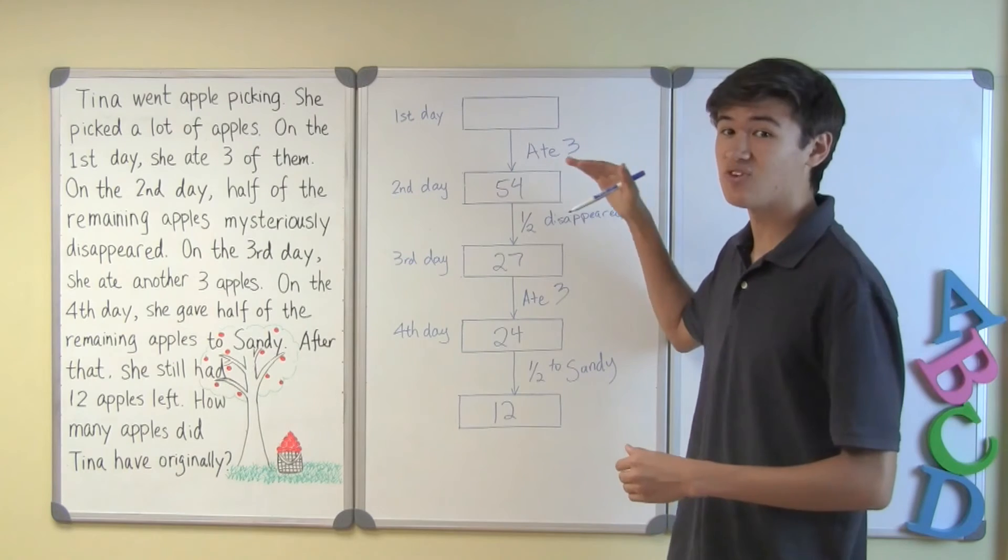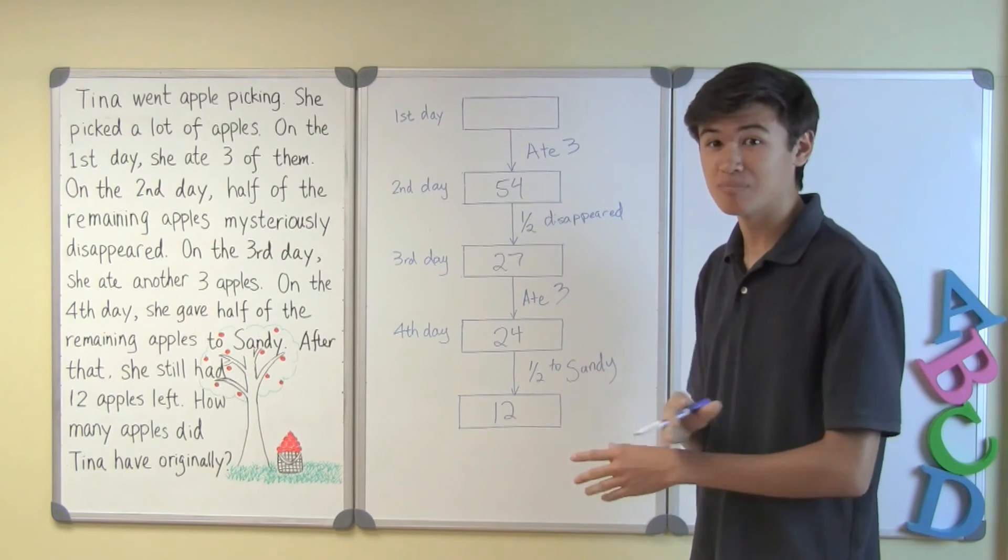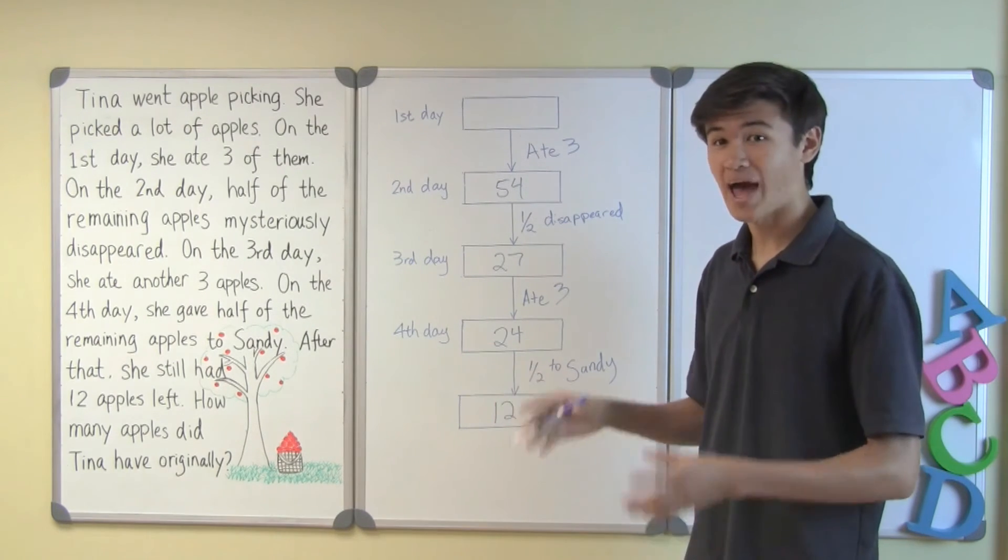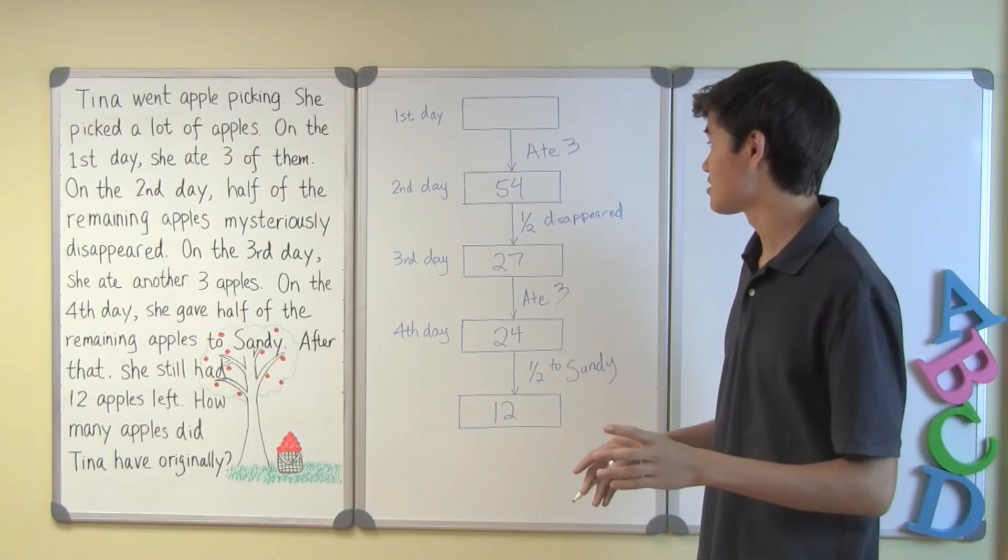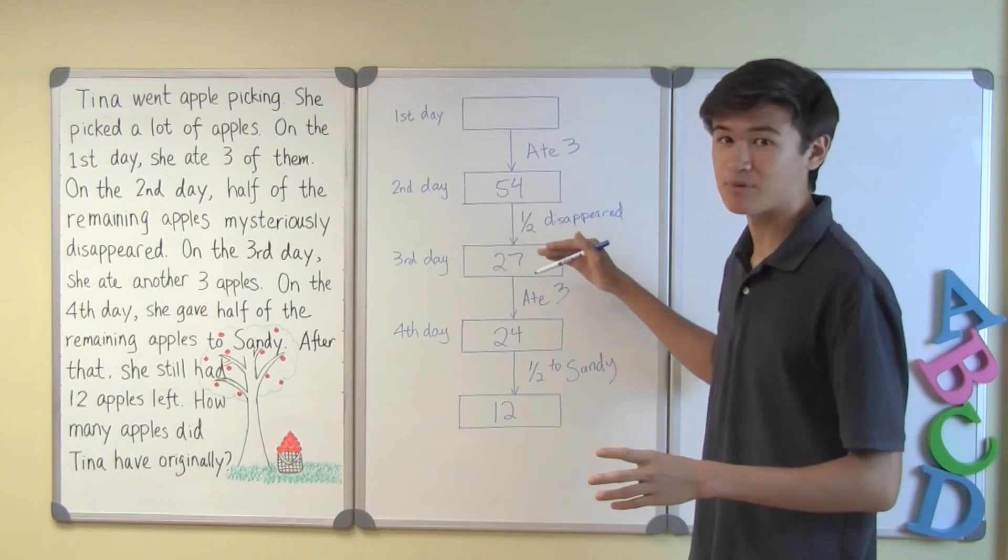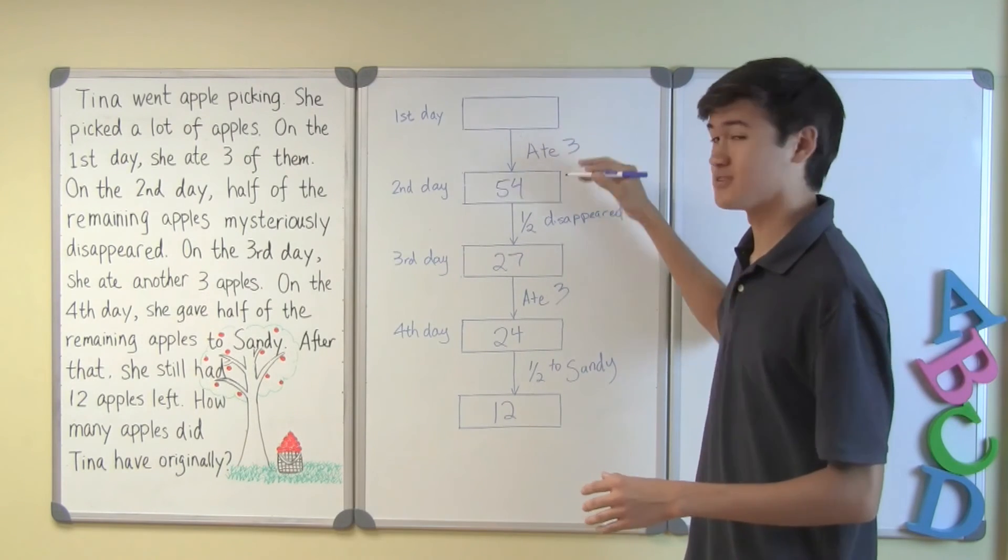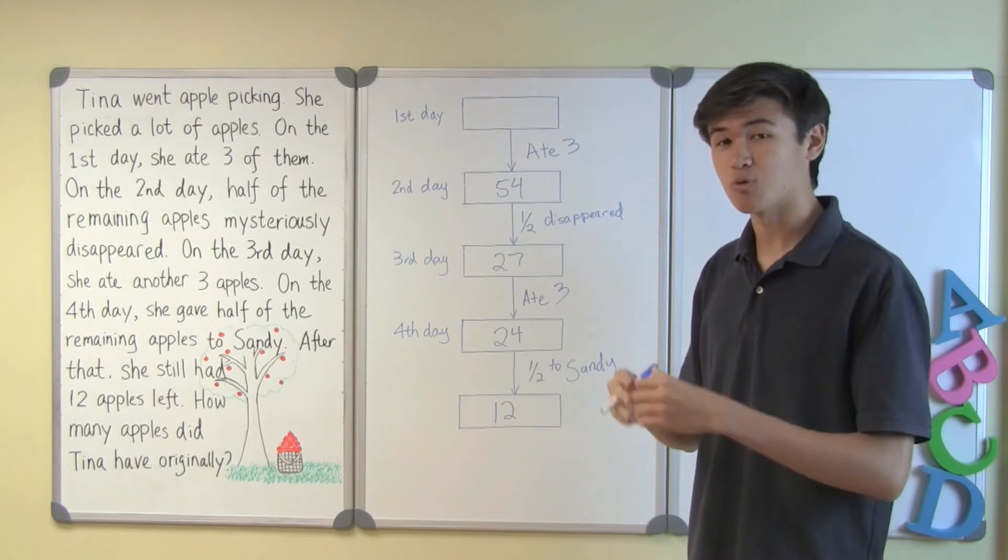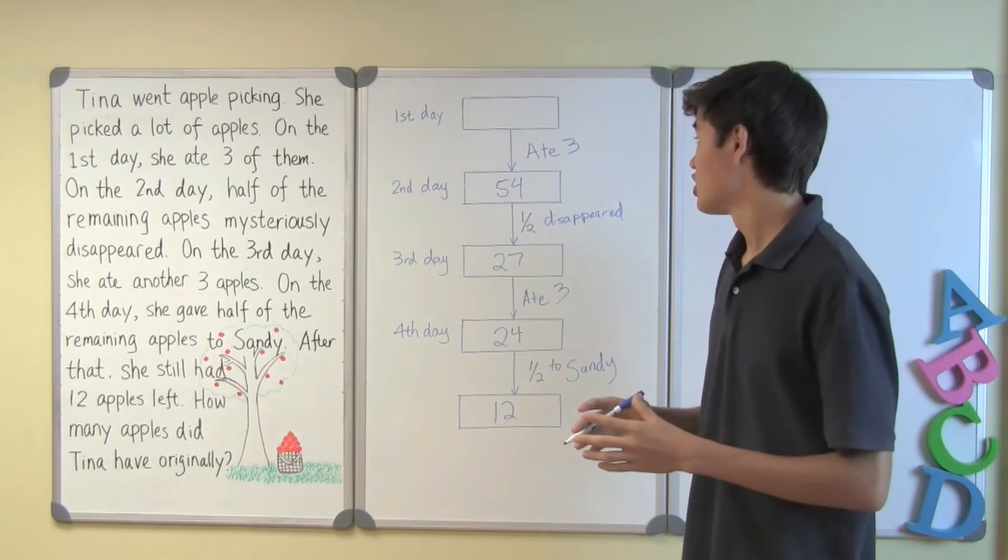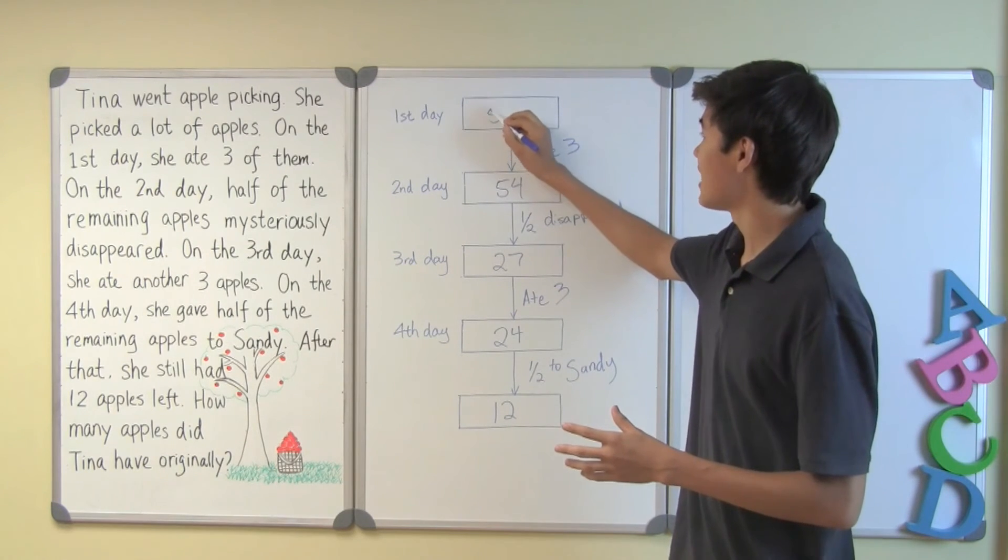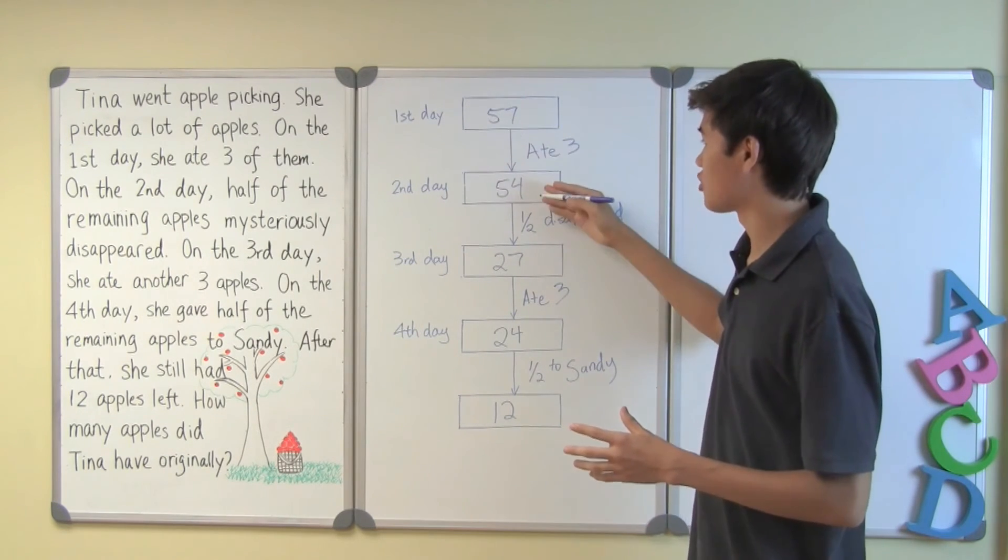So if we look at it, Tina has 54 apples. Half of them mysteriously disappeared. So half of 54 is 27. So she'll have 27 apples left. Now let's go to the very last one. Tina ate three apples. After she ate those three apples, there were 54 left. Which means there must be 57 apples before she ate the three.